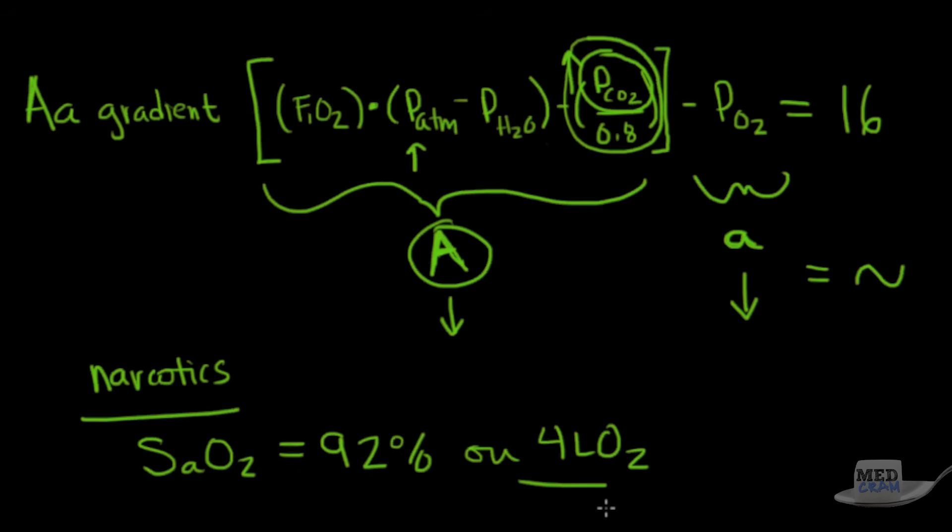And the answer is yes, they're in respiratory failure. Because if you were to do a blood gas, you would see that their pH is like 7.15. Their PCO2 is quite high. Let's say it's 60 or 70. And their PO2 is, let's say about 70.